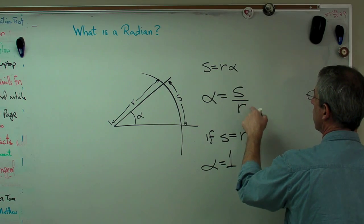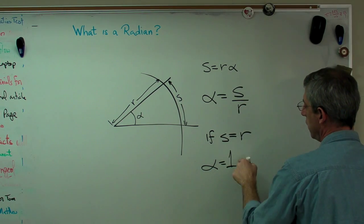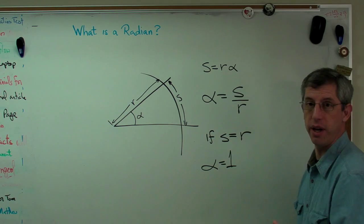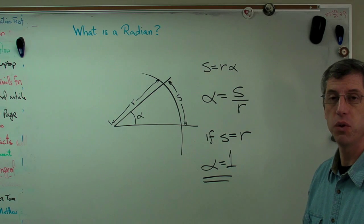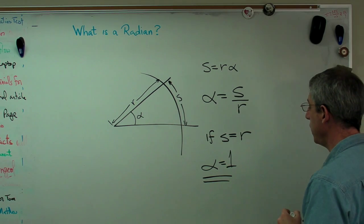This is a distance over a distance. Distance over a distance is like a strain—it cancels out. When that's true, that's one radian.